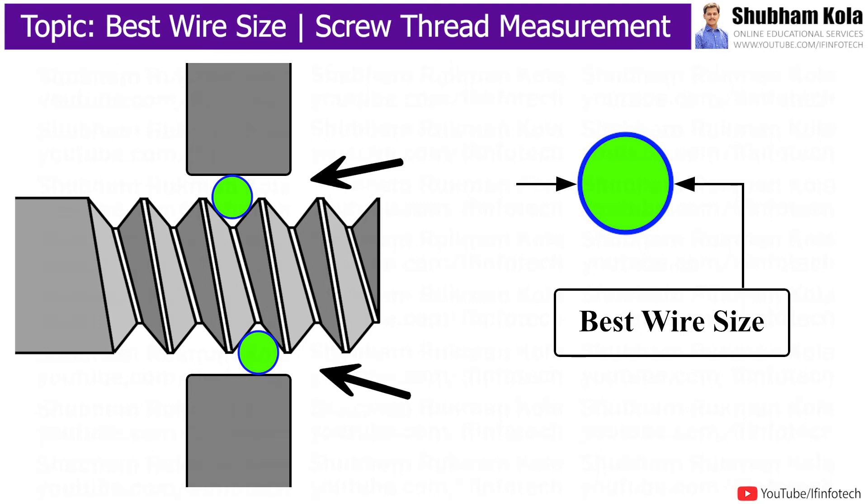If we are using two wires, then it is called two-wire method. And suppose we are using three wires in order to get more accurate reading, then it is called three-wire method.